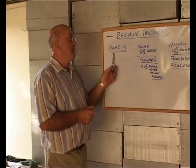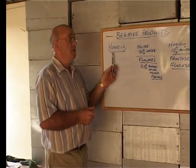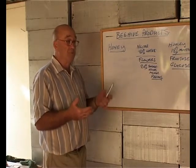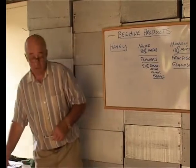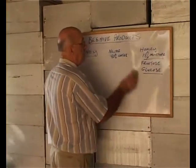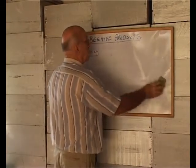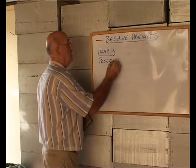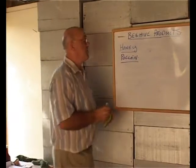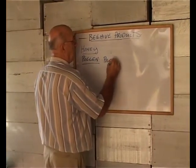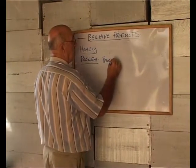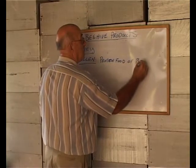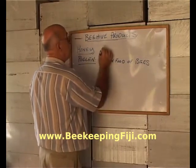So honey is the main product of the beehive, as most beekeepers in the world are honey producers. But there are other products also that the bees produce. The other one is pollen — pollen is the protein food of bees, while honey is the energy food.